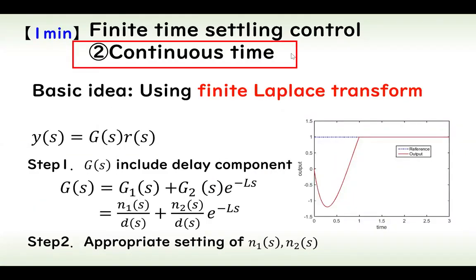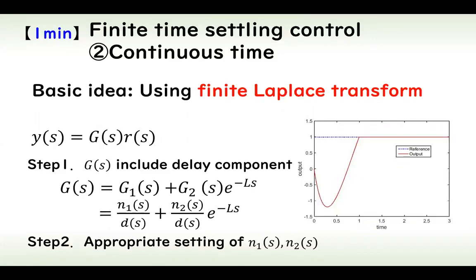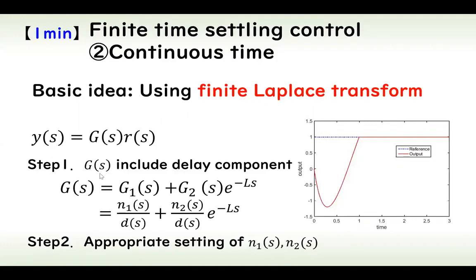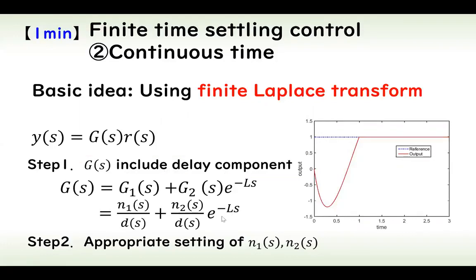For continuous time systems, finite time settling control can be achieved using the finite Laplace transform. The transfer function G(s) includes a delay component, and with appropriate parameter settings, finite time control can be achieved.